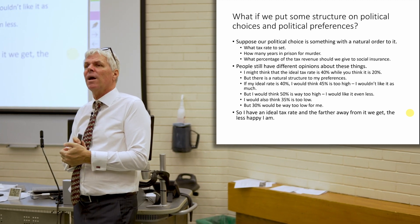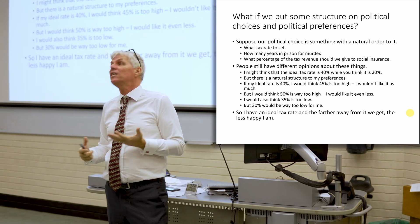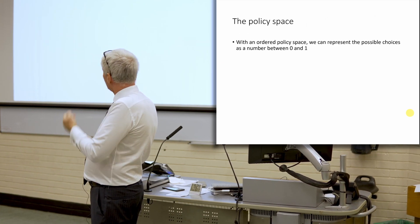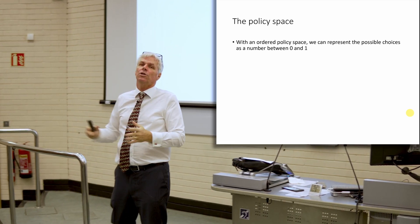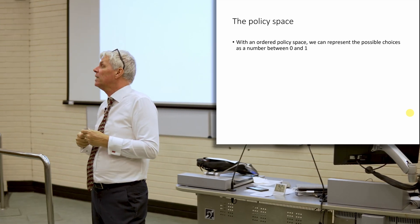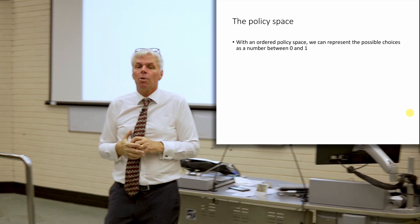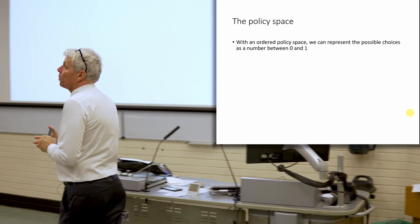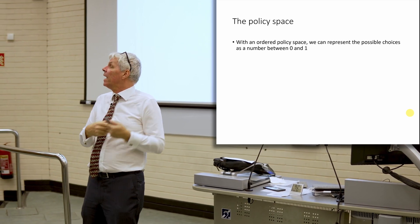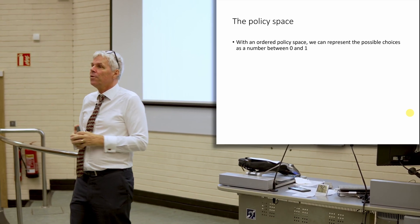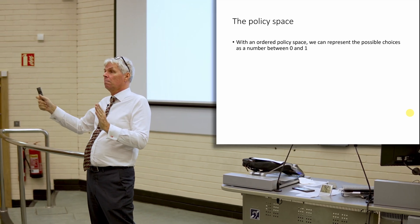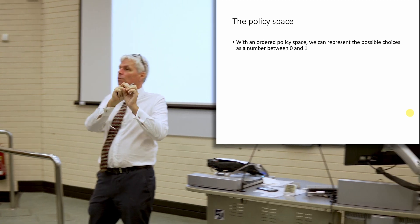So we have these single-peaked preferences, and that's going to be our basic structure. For a lot of things that we think about voting on, this seems, at least to a lot of people, reasonable. For our policy space, we need something with a natural order, and we're going to arbitrarily put that on the range from 0 to 1. It doesn't need to be something that's numerically measurable. It could be how mean should we be to people when they go to prison — 0 could be very nice and rehabilitative, 1 could be punitive and harsh.